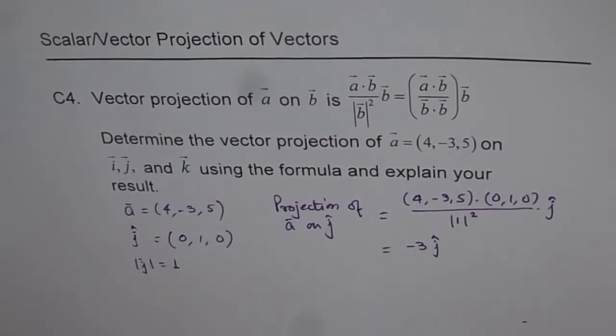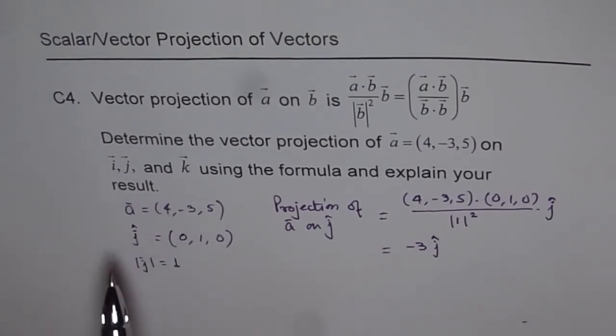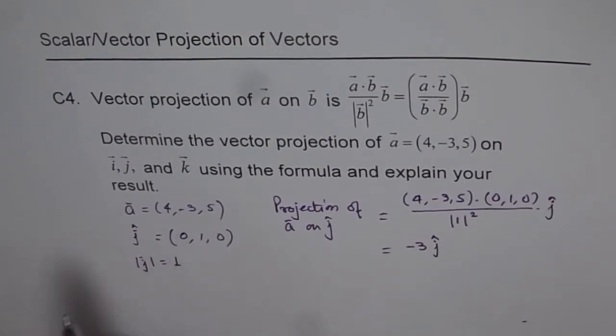Well, if you follow the same process, then you guess: what is the vector projection of the vector on i and k? It will be 4 and 5, respectively. The components.